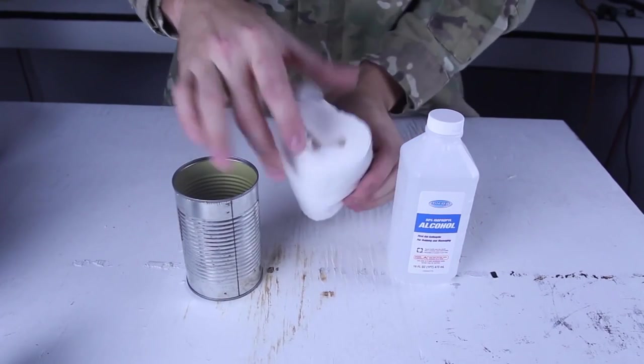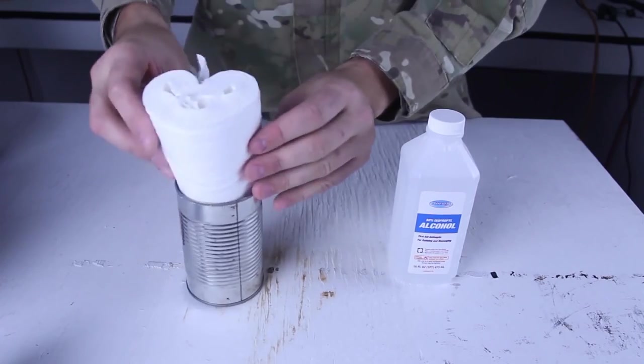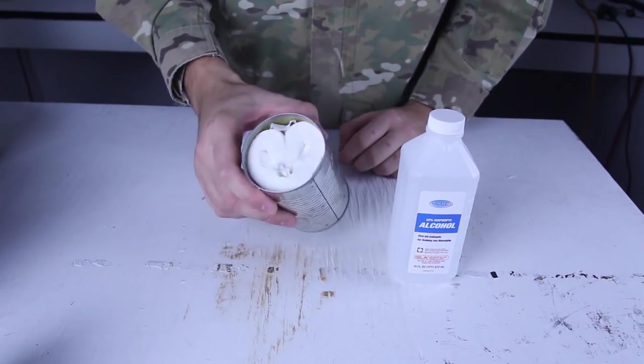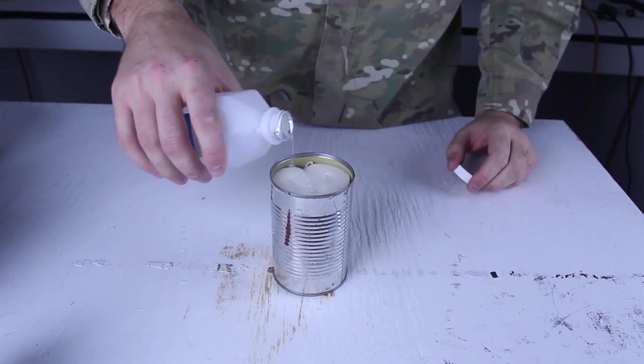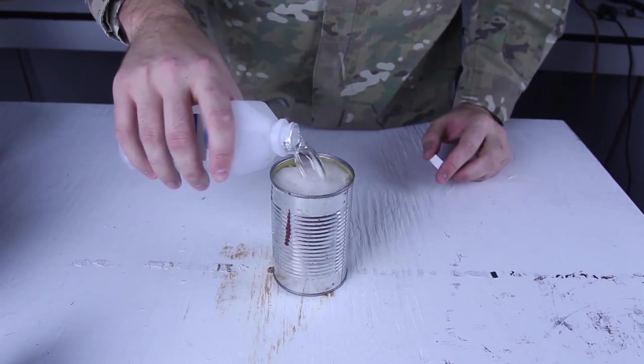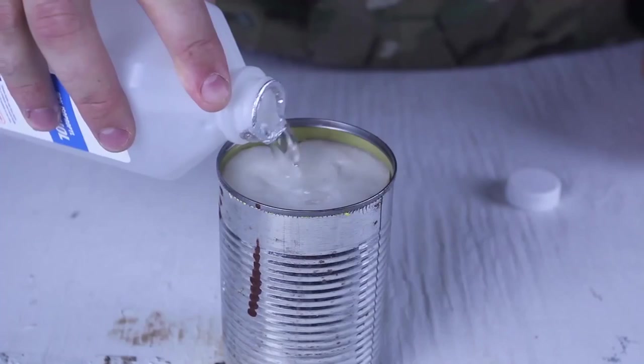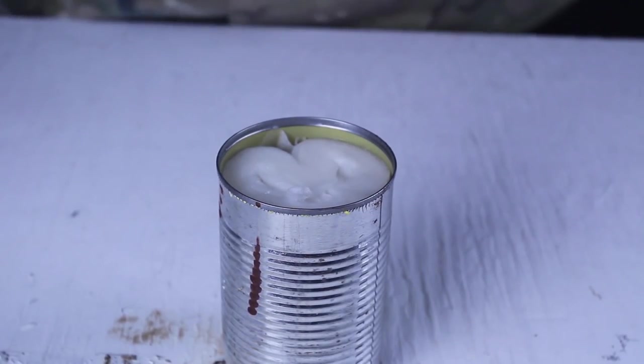And a toilet paper. I took the tube out so it doesn't have a tube. And then I'm gonna put it inside of a can like that. Then I'm gonna grab alcohol and fill it up. So the toilet paper will soak in all this alcohol. That should be enough. Now we're gonna go outside and test it out.